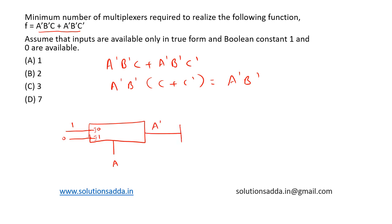In the second multiplexer, A' goes to I0, 0 goes to I1, and B is the select input. This outputs A'B'. Therefore, we require two 2-by-1 multiplexers to implement this function. The correct answer is option B: 2.